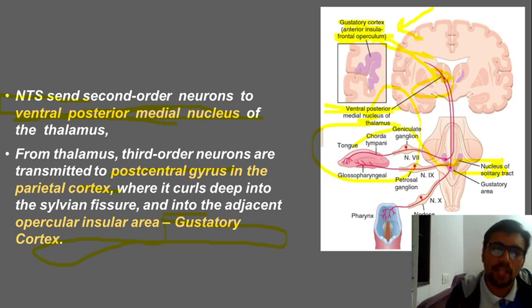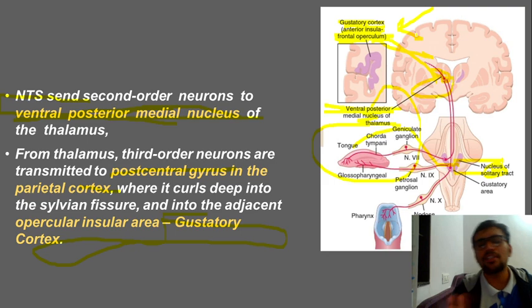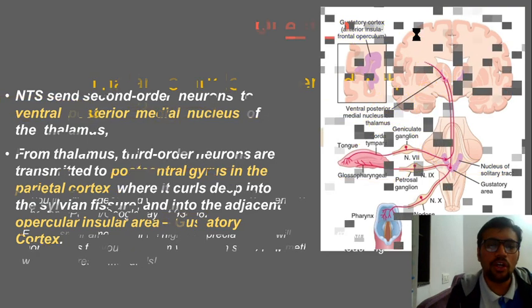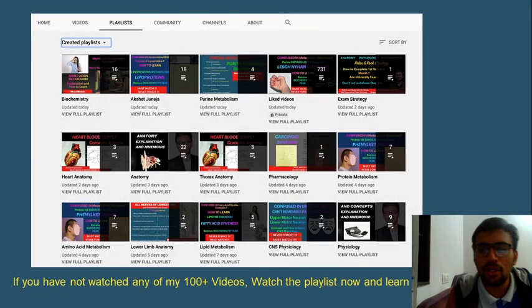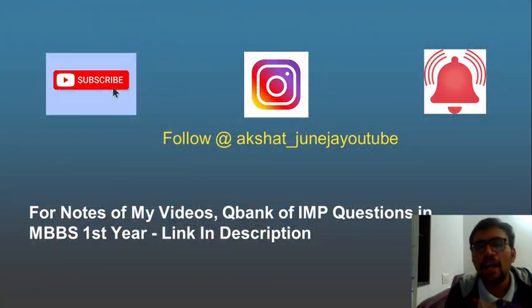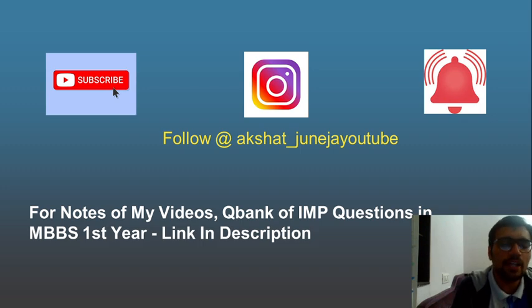The operculum, insula, and related structures are anatomical terms for the gustatory cortex region. This is all you need to know regarding taste sensations. Kindly comment below with answers to the question, keep watching other videos, and revise regularly — otherwise you won't retain things longer. You can connect with me on all platforms. Thank you, stay safe, stay healthy.